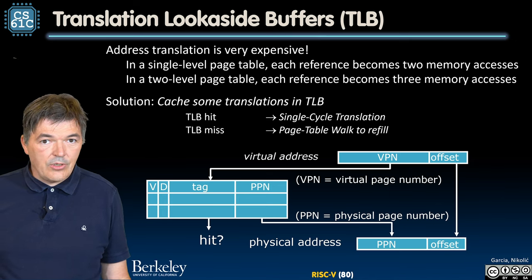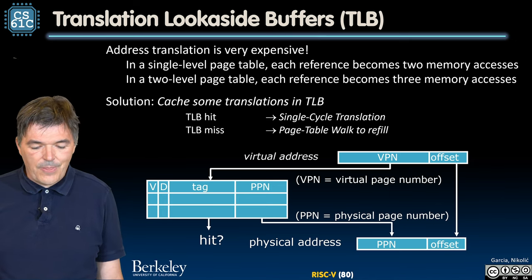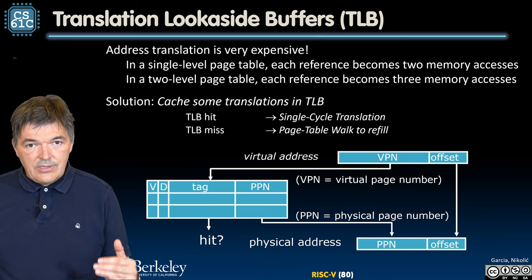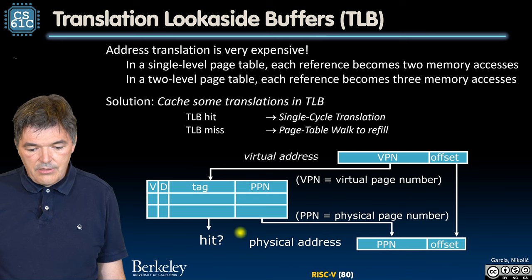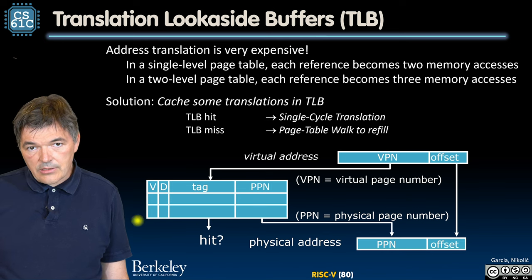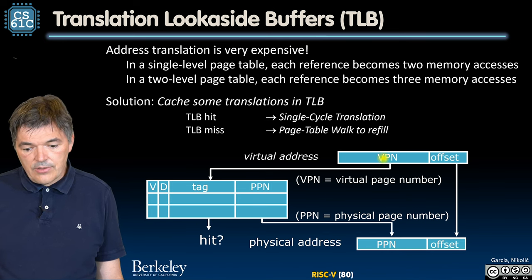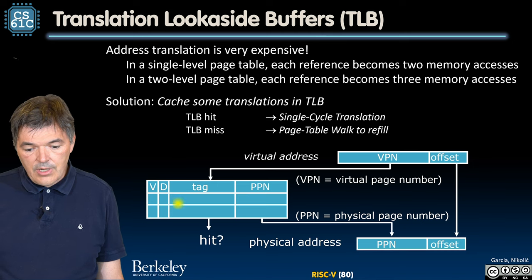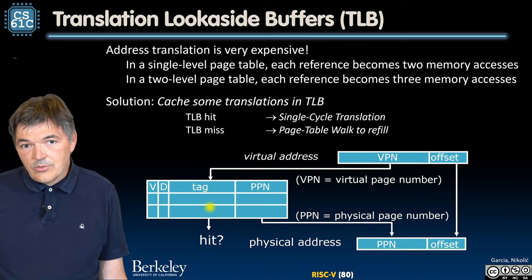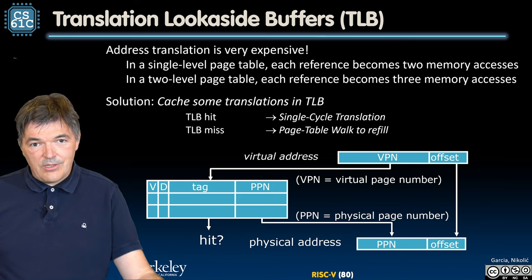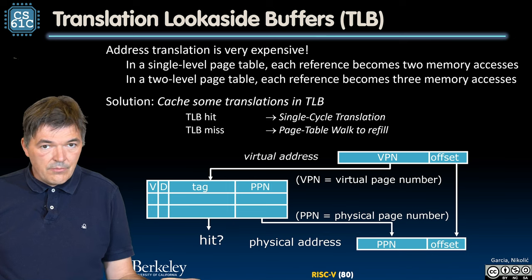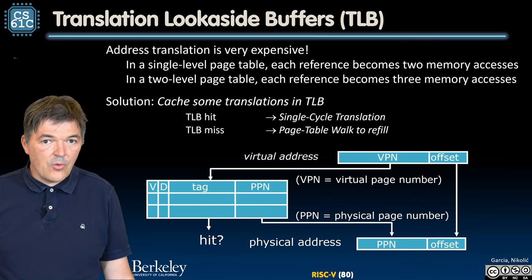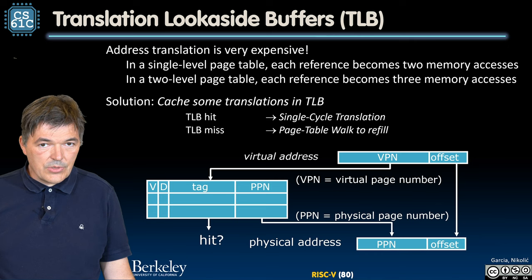This is what would be called a TLB hit. If we have a TLB miss, meaning that we cannot find a tag that corresponds to this virtual page number in our TLB, we need to go and walk our page tables — depending on how many levels of hierarchy there are — and update our TLB with a new reference and then proceed with that.